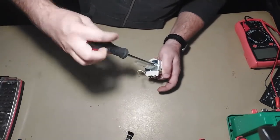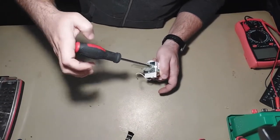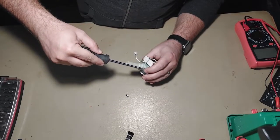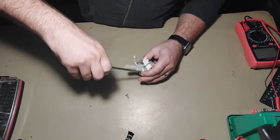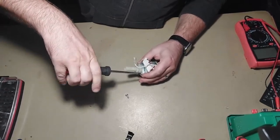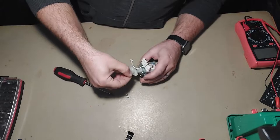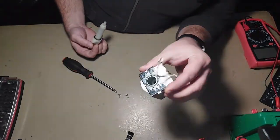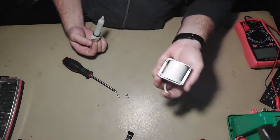Unscrew these two screws and on the other side, and then you can remove the inner part. This is the electromagnet; you can put it aside.